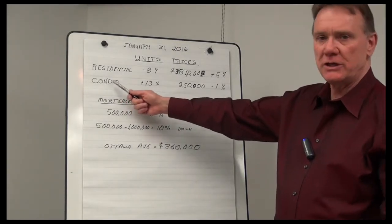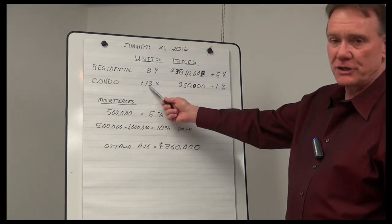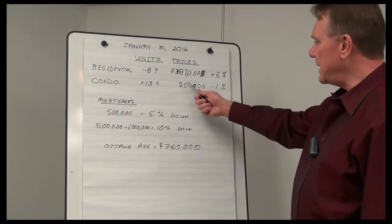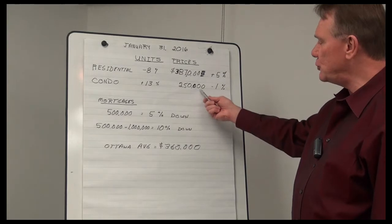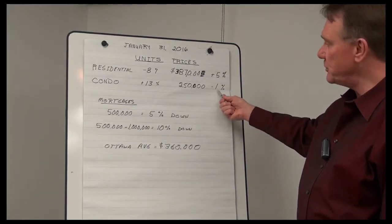Condominiums, this is all types, row units and apartments. The number sold is up 13%, and the average price of a condo is $250,000, which is a decline of 1%.